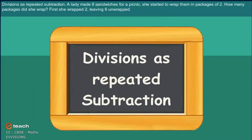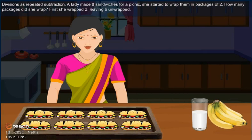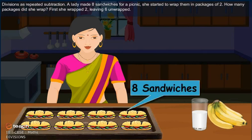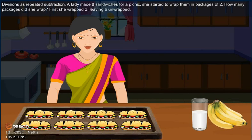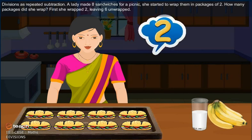Division as repeated subtraction. A lady made 8 sandwiches for a picnic. She started to wrap them in packages of 2. How many packages did she wrap?